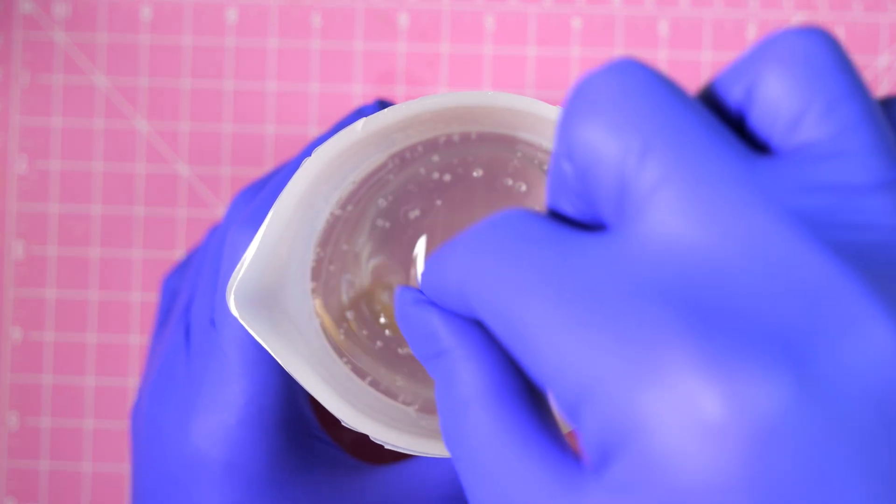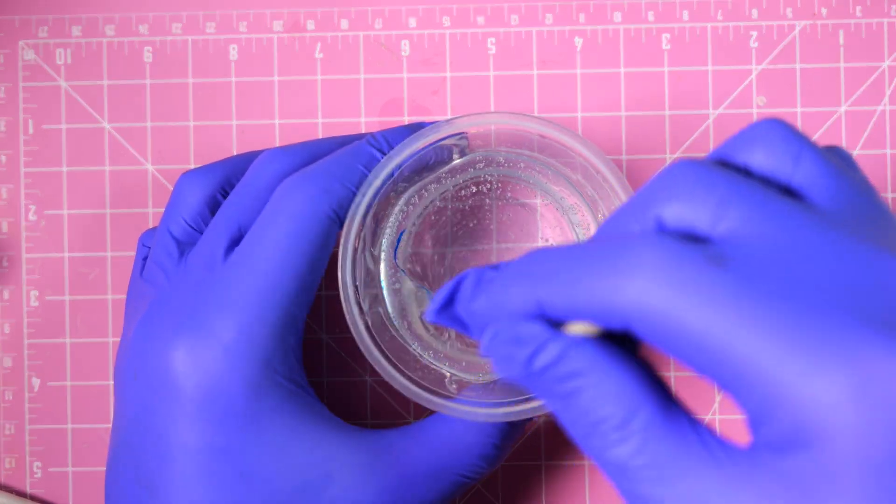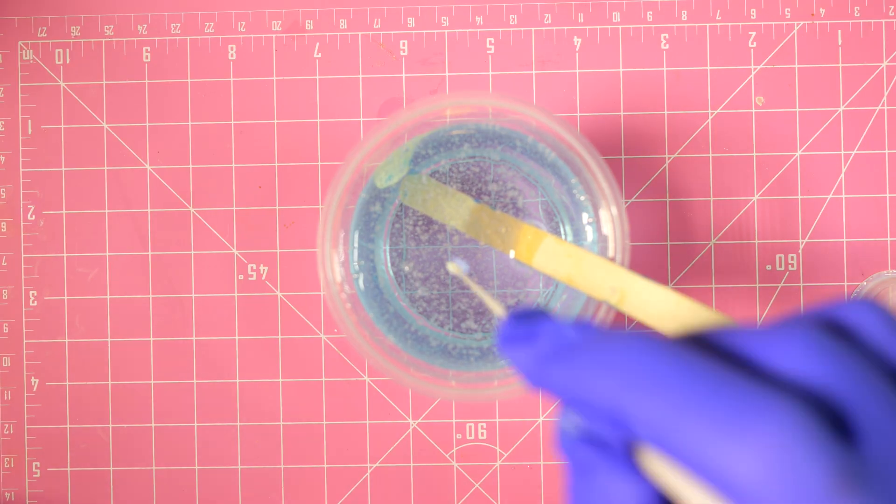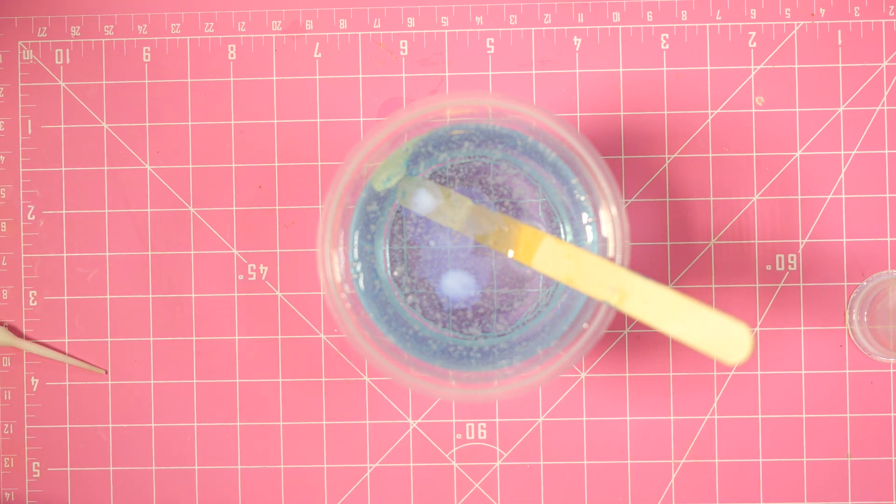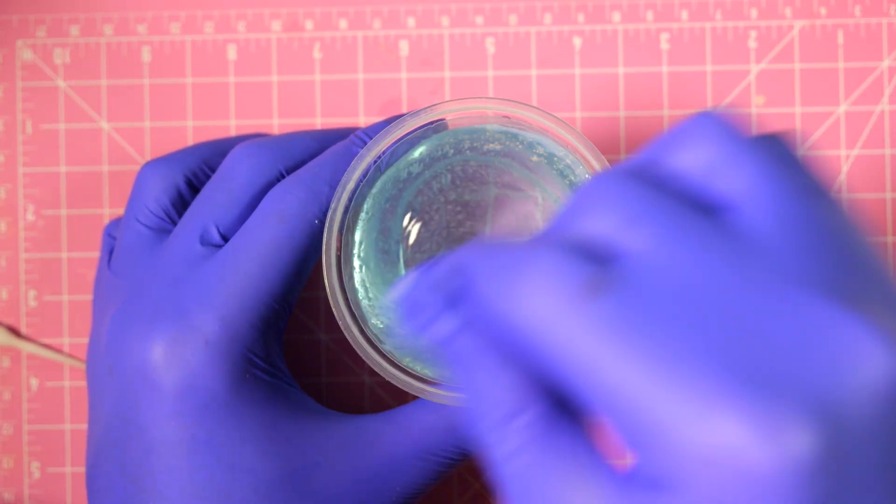To get started, we're going to take two-part resin and mix it together. This is the most tedious part of the whole project, making the different shades of blues so we can make the Allay. I didn't have the right pigment, so it was a lot of trial and error.